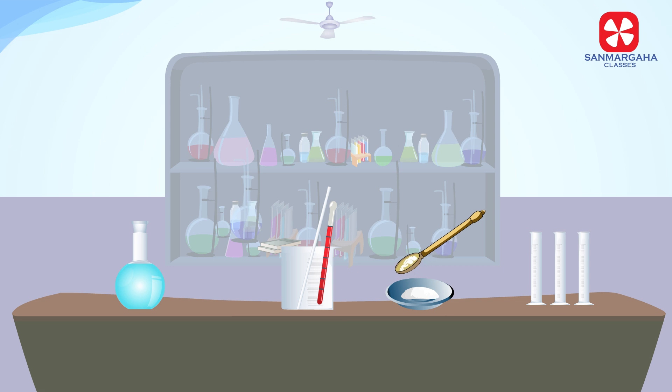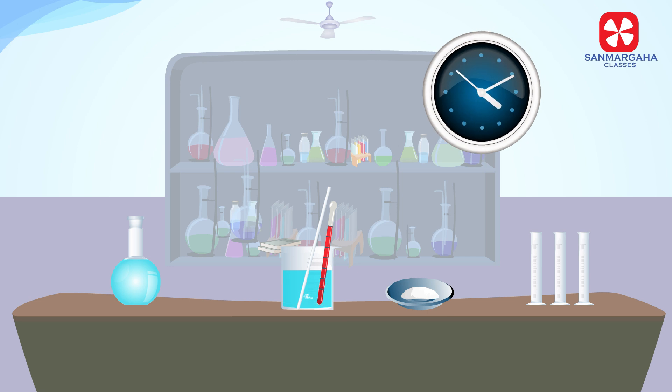Take a small quantity of quicklime using a spatula and transfer it into a beaker. Add water slowly to it. Introduce the laboratory thermometer and record the initial temperature of water. Wait a few seconds for the reaction to commence.